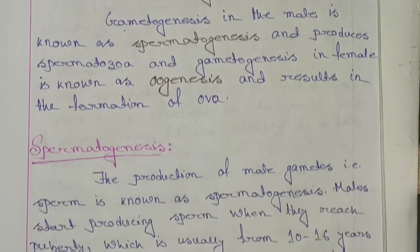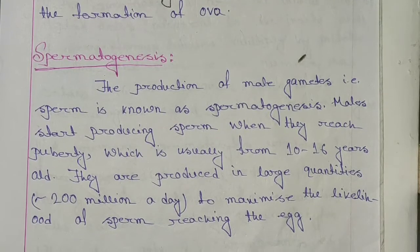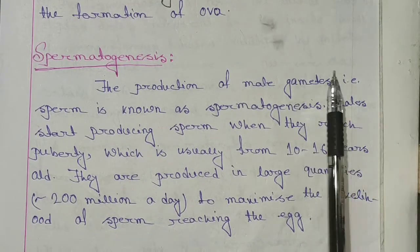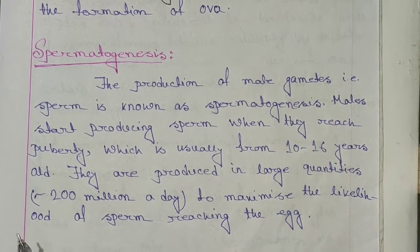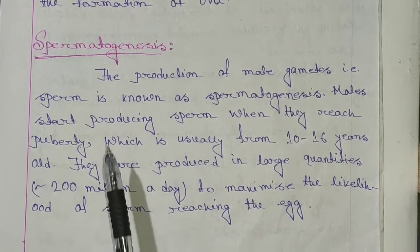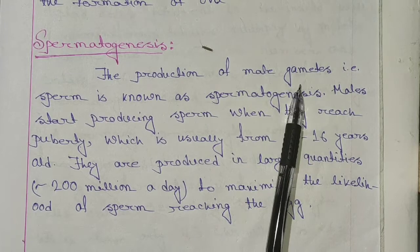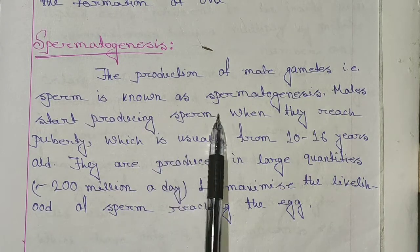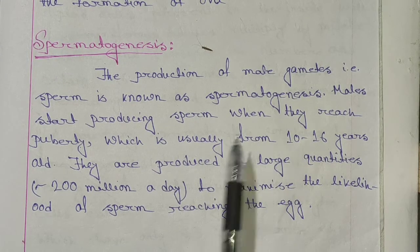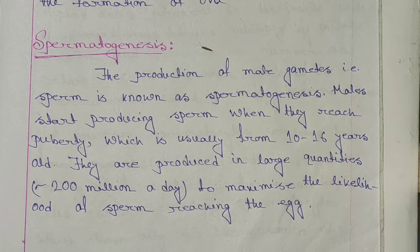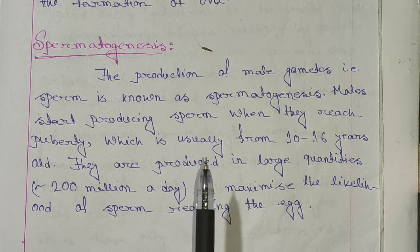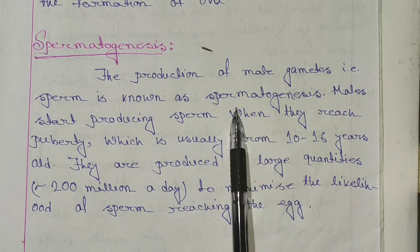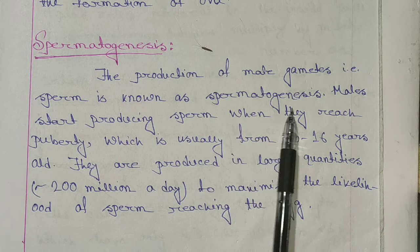Now we will discuss spermatogenesis. The production of the male gametes, that is sperm, is known as spermatogenesis. Purusho ka gamet produce hone ka jo procedure hota hai, usi ko hum spermatogenesis kehte hai.